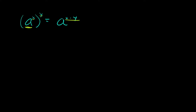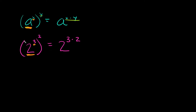Let's start with an easy example and get progressively harder. The first one is two to the third power, raised to the second power. This simplifies to two to the three times two. We have a number raised to an exponent, and that whole thing raised to another exponent, so we multiply the exponents — three and two. Simplified, this equals two to the sixth, which equals 64.